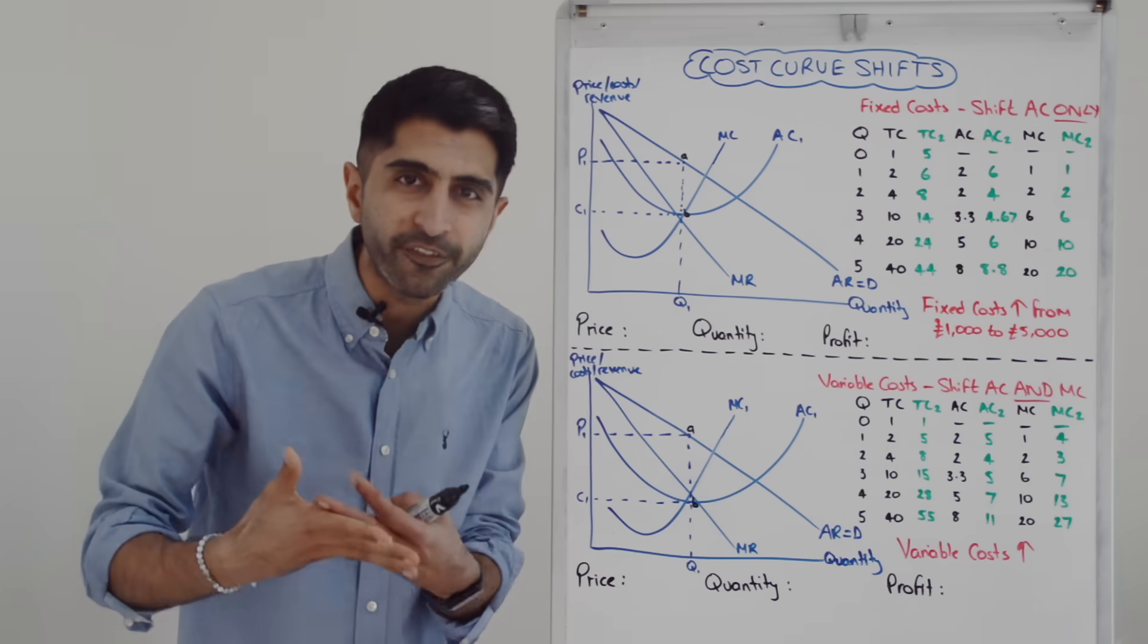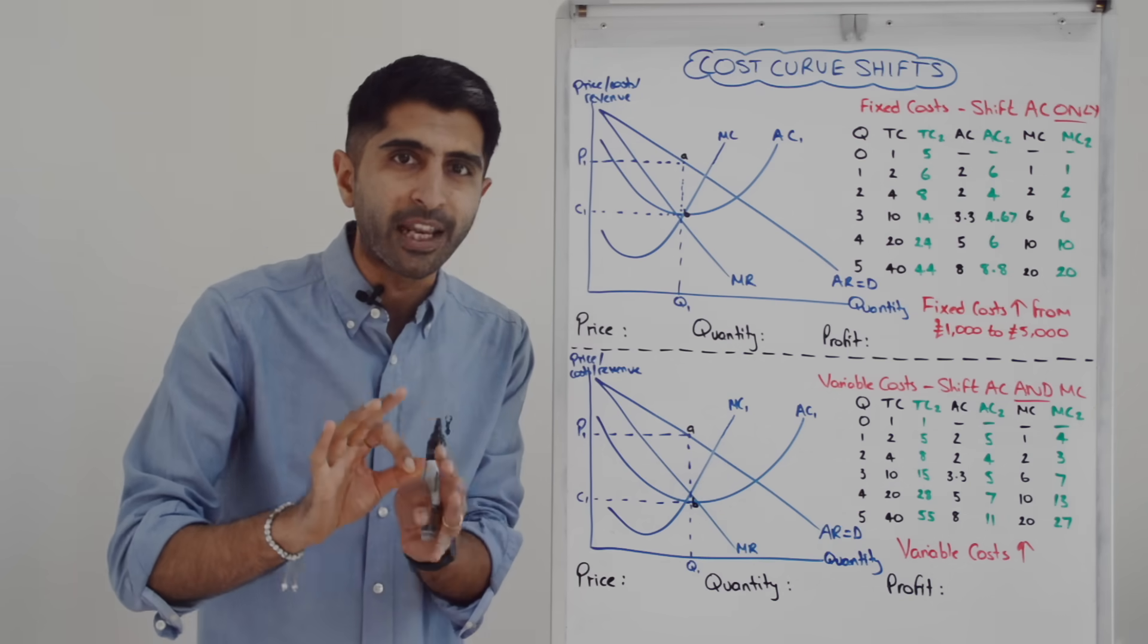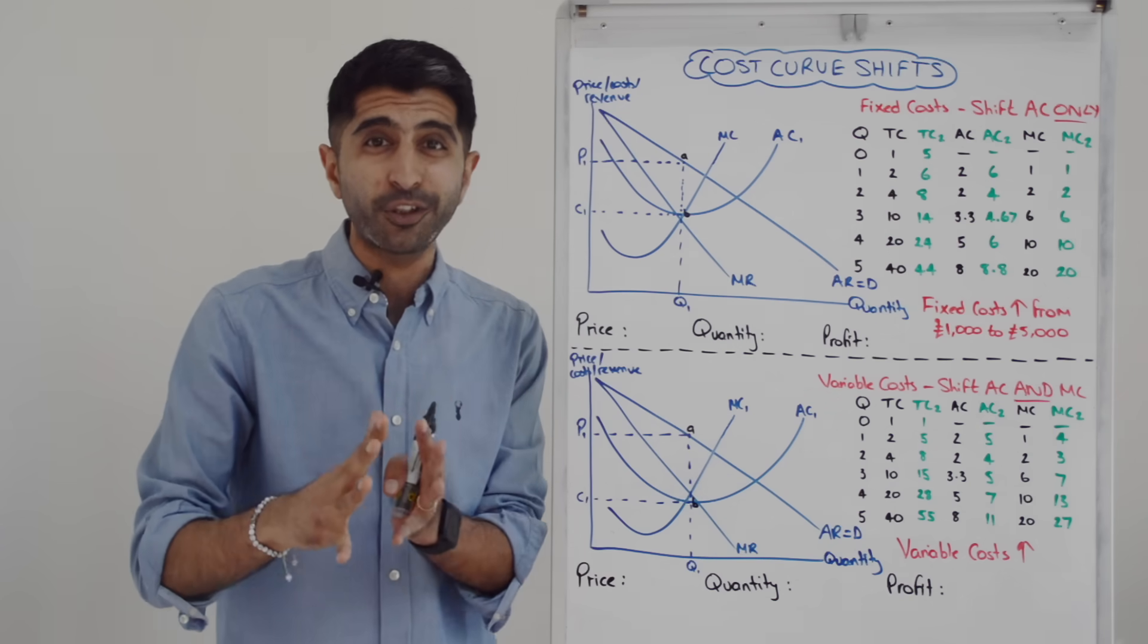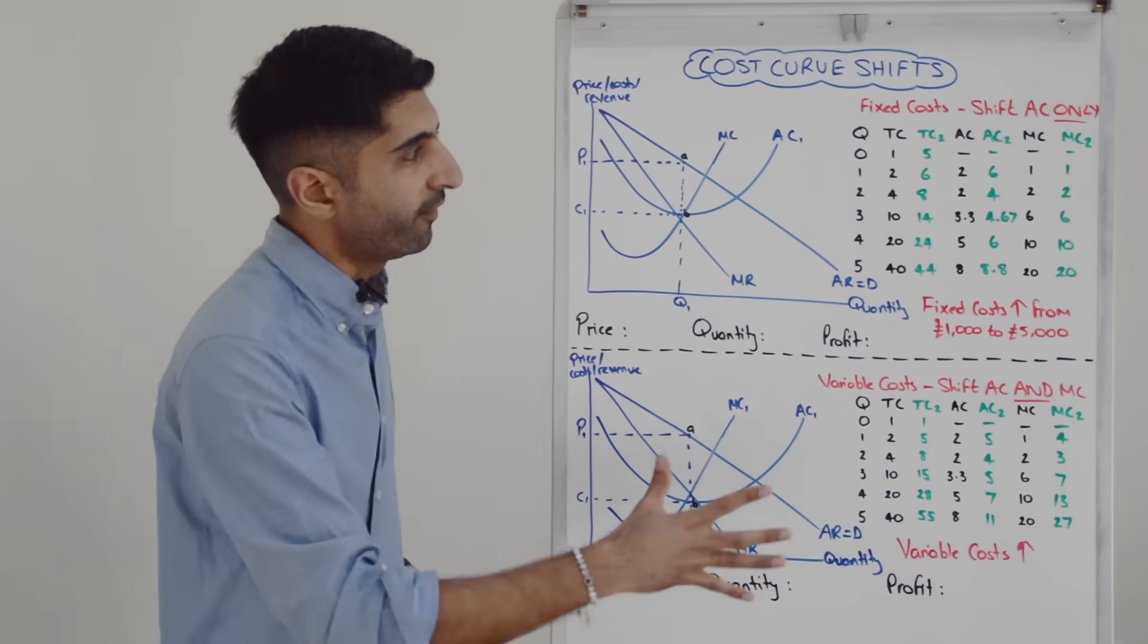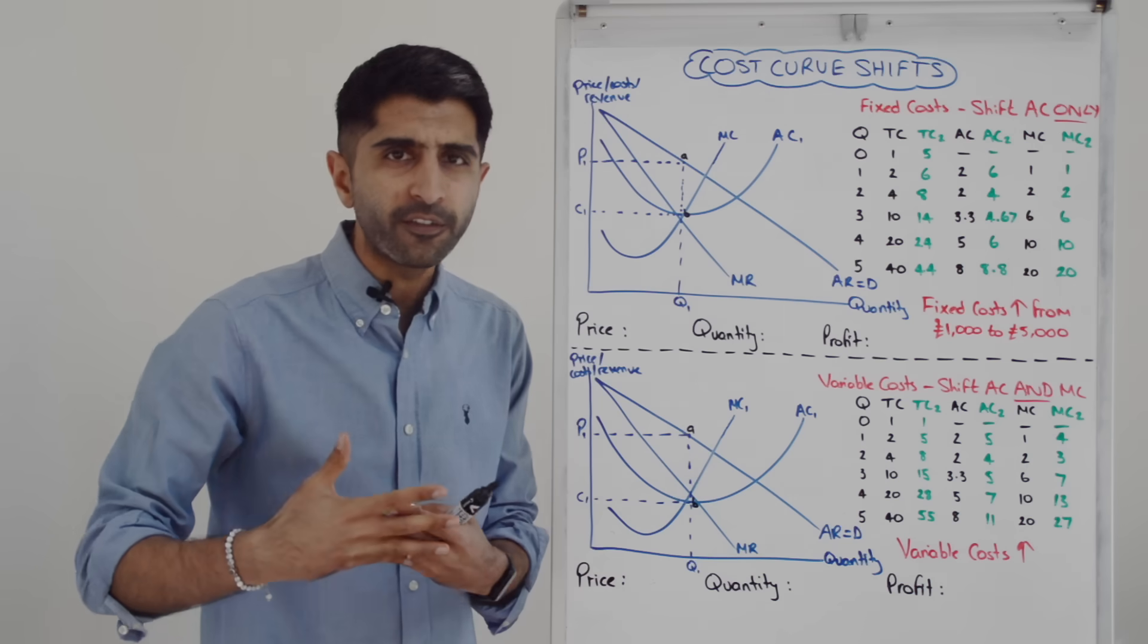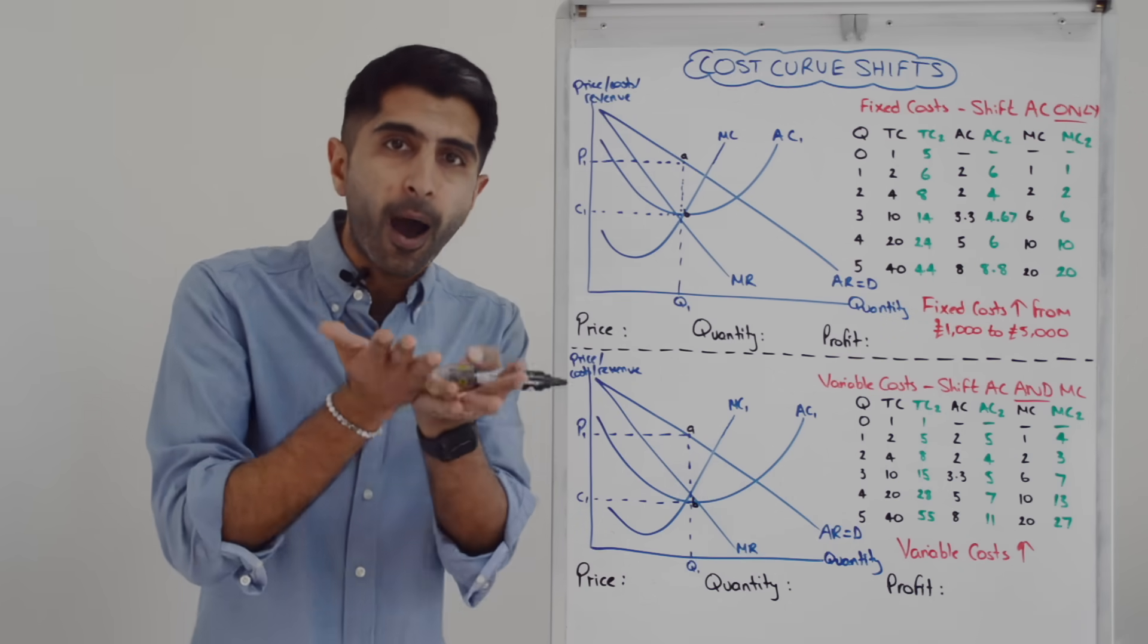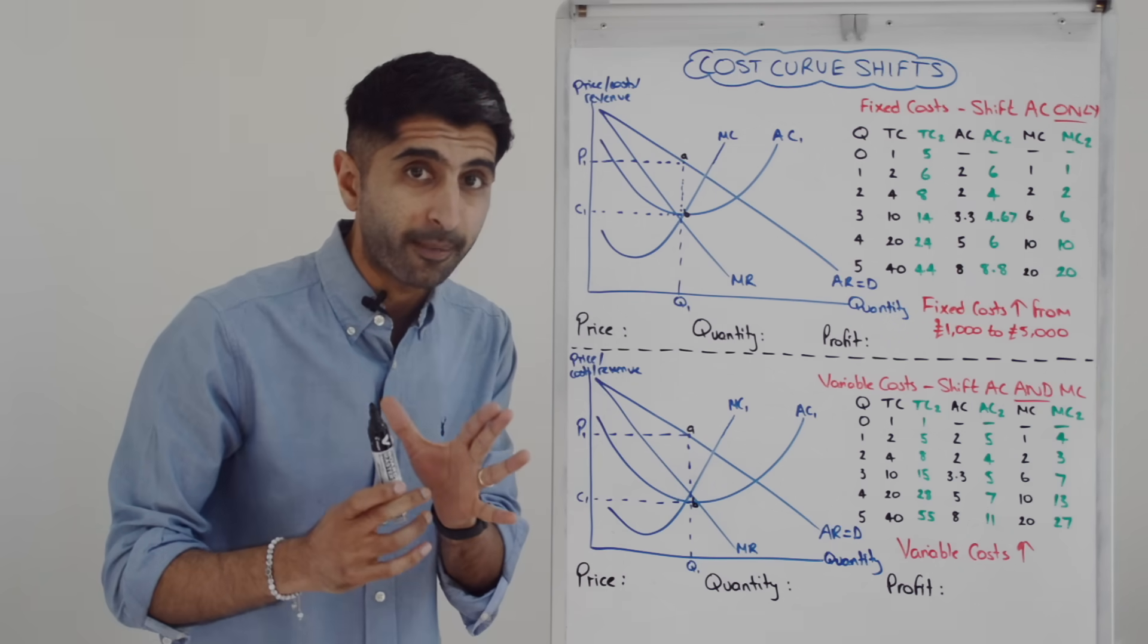So we can see a change in fixed costs does not change the rate of change of total cost, i.e. it does not change marginal cost. So all we do is shift the average cost curve. In this case, it's been an increase in fixed costs, so we're going to be shifting the AC curve upwards and it looks like this diagrammatically.